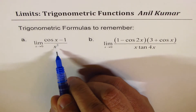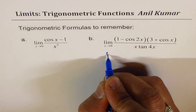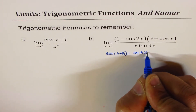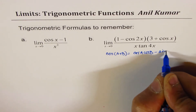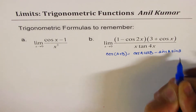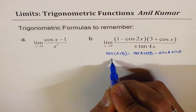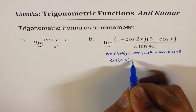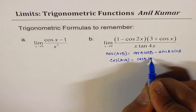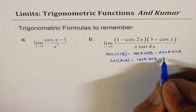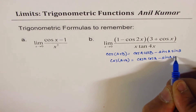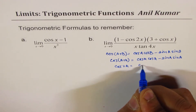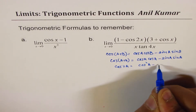One of them is the double angle formula for cosine. As you know, cos(a+b) can be written as cos a cos b minus sin a sin b. Now, if I set b equals to a, then we have cos 2a equals to cos a cos a minus sin a sin a, which gives us cos 2a equals cos squared a minus sin squared a.